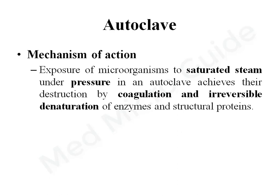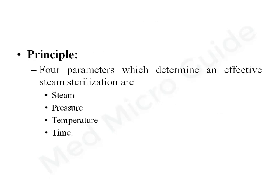The mechanism of action of moist heat above 100 degrees Celsius: when microorganisms are exposed to saturated steam under pressure, they are destroyed by coagulation and irreversible denaturation of enzymes and structural proteins. There are four parameters which determine effective steam sterilization: steam per se, pressure, temperature, and time.